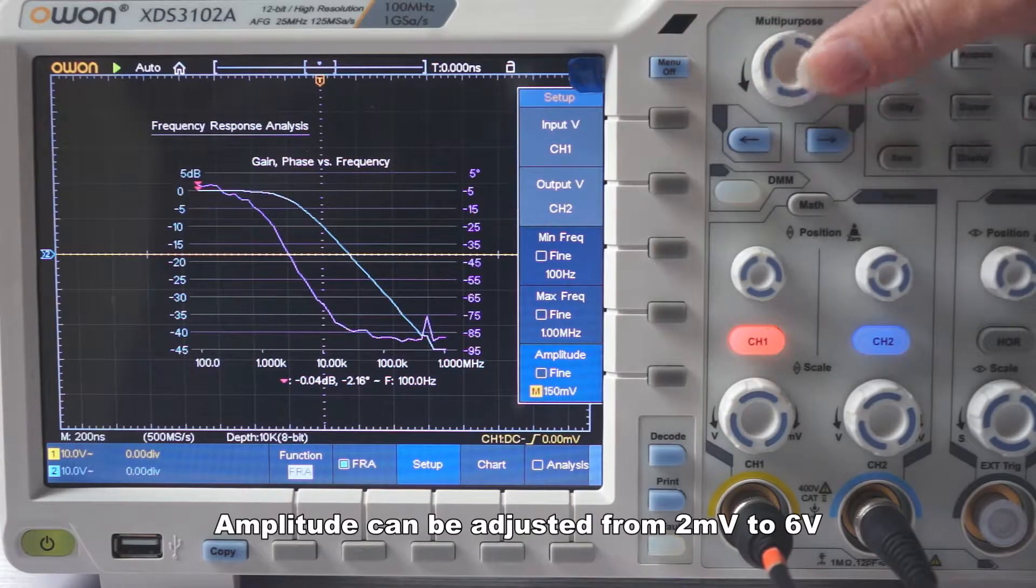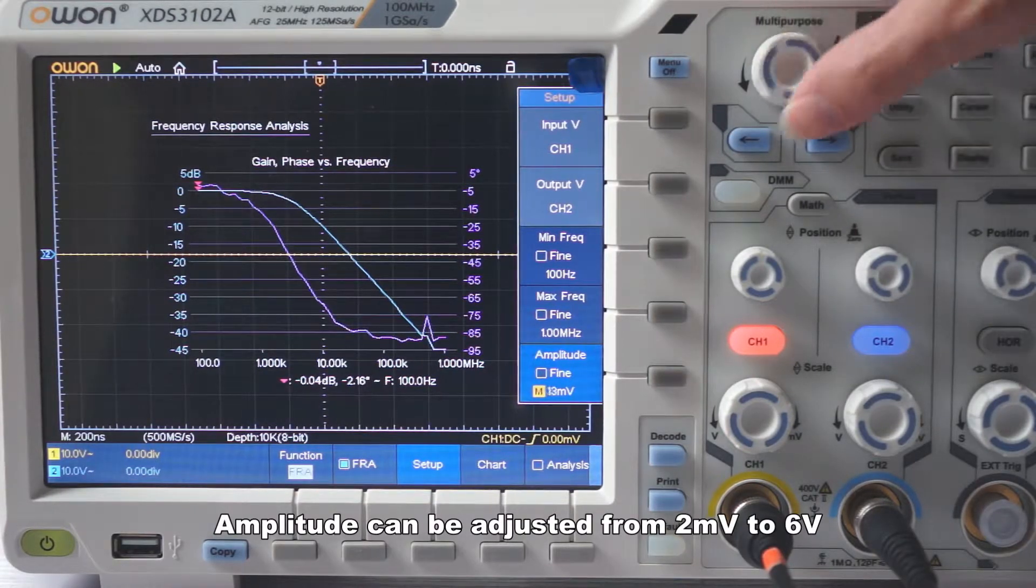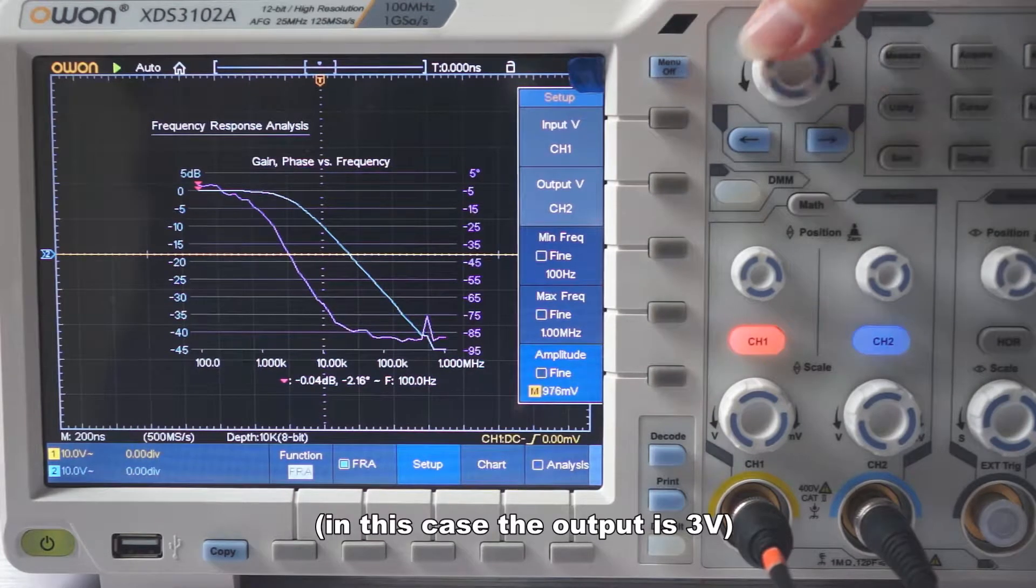Amplitude can be adjusted from 2 mV to 6 V. In this case, the output is 3 V.